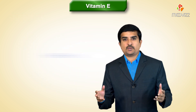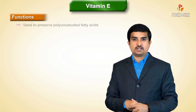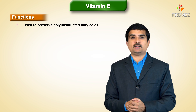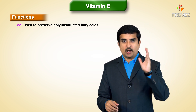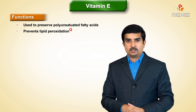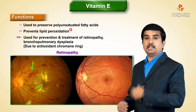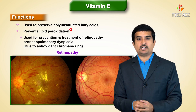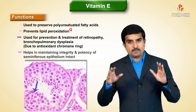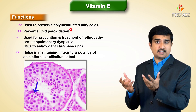Vitamin E is extremely important to preserve all the unsaturated fatty acids, also called polyunsaturated fatty acids. For this reason, Vitamin E prevents lipid peroxidation in vivo due to its antioxidant property, mainly because of the presence of the chromanol ring. It is also used for the prevention and treatment of retinopathy as well as bronchopulmonary dysplasia.